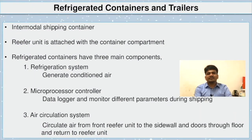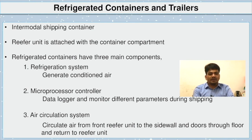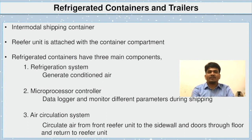Refrigerated containers and trailers — in an intermodal shipping container, the reefer unit is attached with the container compartment. Refrigerated containers have three main components: first, the refrigeration system which generates conditioned air; second, a microprocessor controller with a data logger that monitors different parameters during shipping; third, the air circulation system, which circulates air from the front reefer unit to the sidewall and doors through the floor and back to the reefer unit.